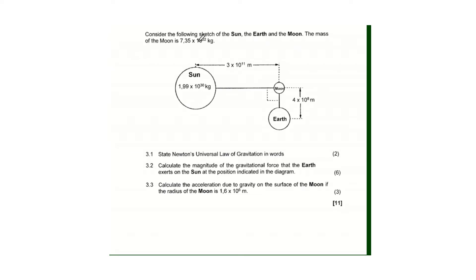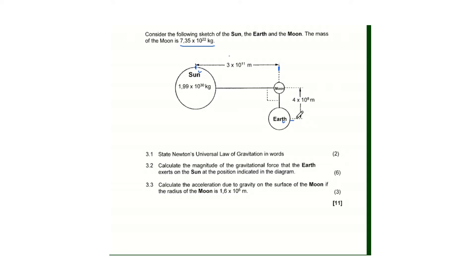Consider the following sketch: this is the Sun, the Earth, and the Moon. The mass of the Moon is 7.38 times 10 to the power 22 kg. We are also given the distance between the Sun and the Moon, and the distance between the Moon and the Earth.